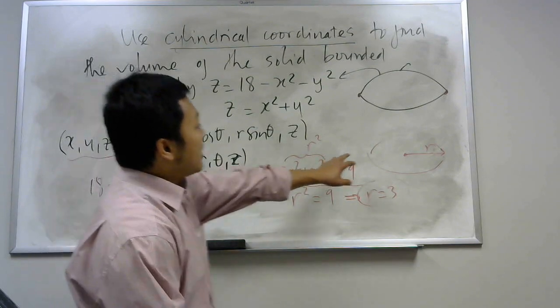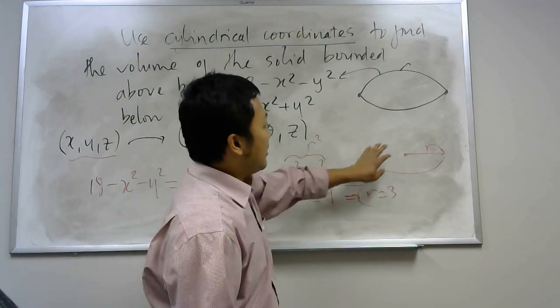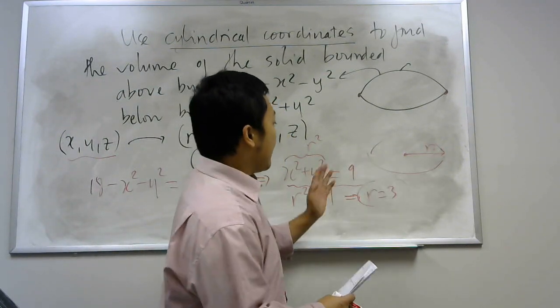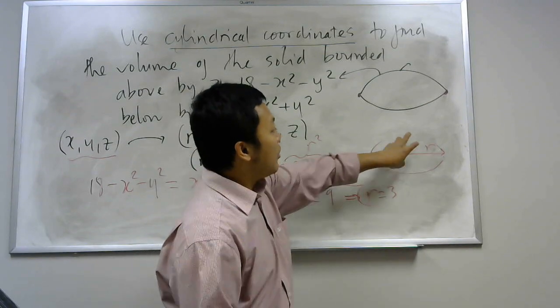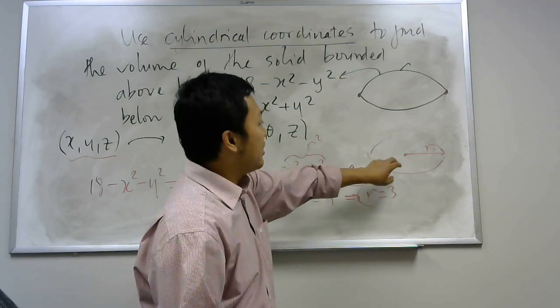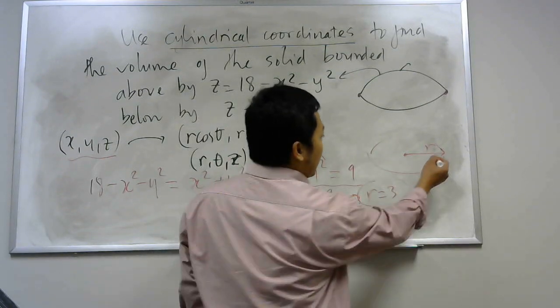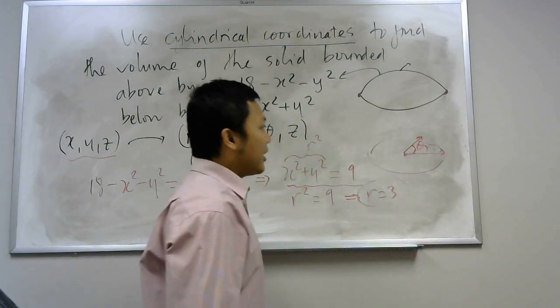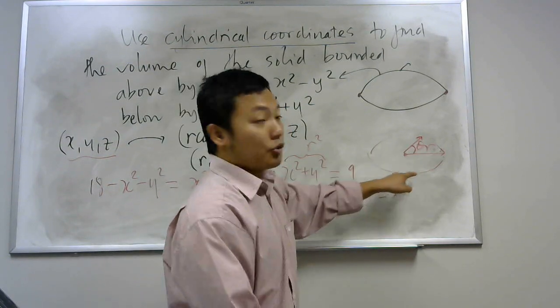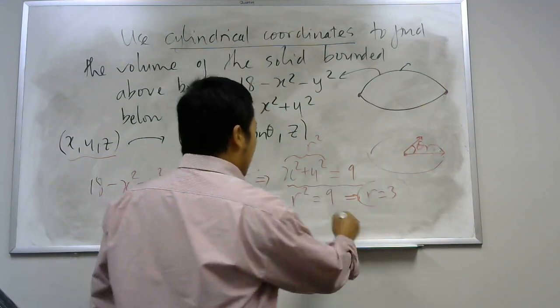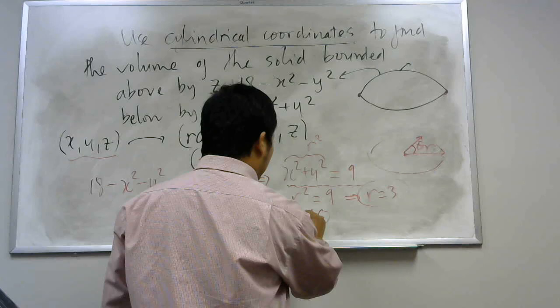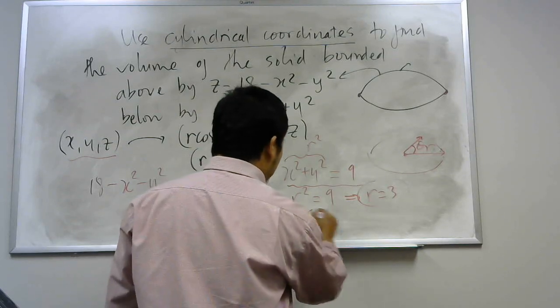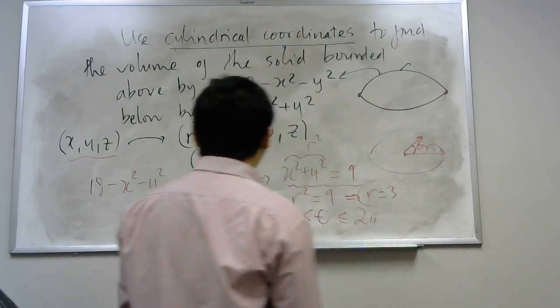r is equal to 3. So since this is your region of integration in the x-y plane, that is the whole circle. r is from 0 to 3, and at the same time, you have the angle theta. Theta will go from 0 to 2π. So from here, you have theta go from 0 to 2π.